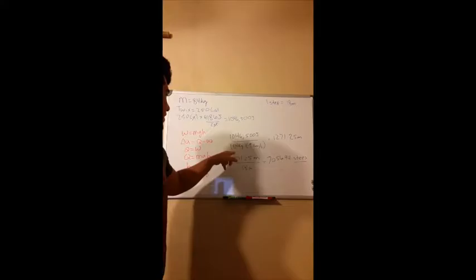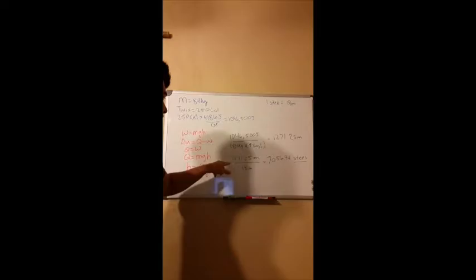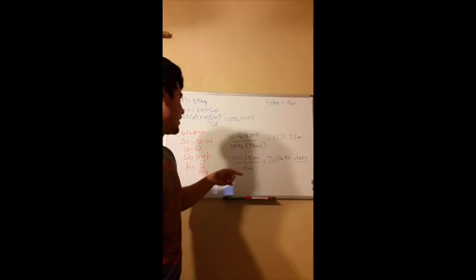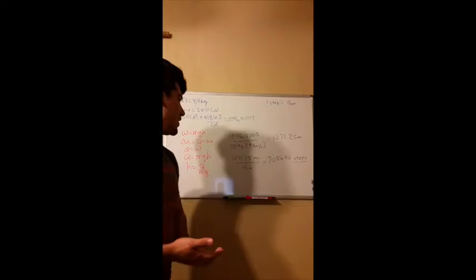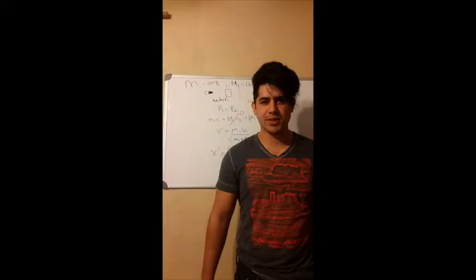The answer for H is 1,271.25 meters. I divide the heat by my mass — which is 84 kilograms — and gravity. Then I divide that height, 1,271.25 meters, by 0.1818 meters, which is the height of one step. And so it takes 7,056.94 steps to burn off this candy bar.